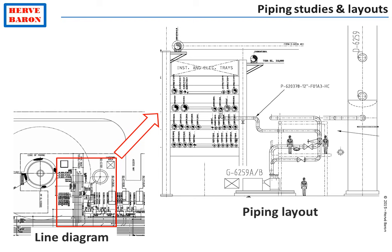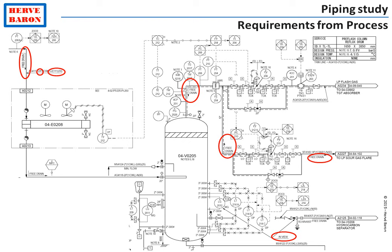Let's review the requirements taken into account while doing these piping studies. First of all, the process requirements. These are shown on the P&IDs. They include requirements for the proper flow of fluids inside the lines, such as sloping — a requirement for one line to be sloped — or to have no pocket, to prevent accumulation of liquids in the low points of gas lines, for instance.